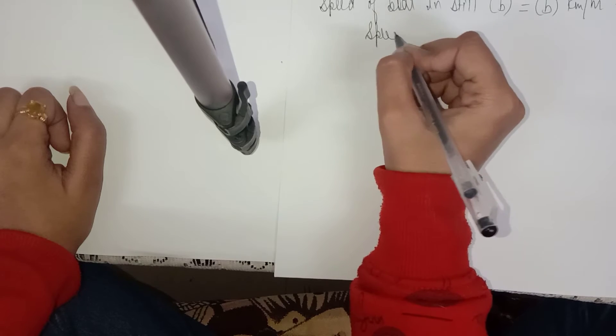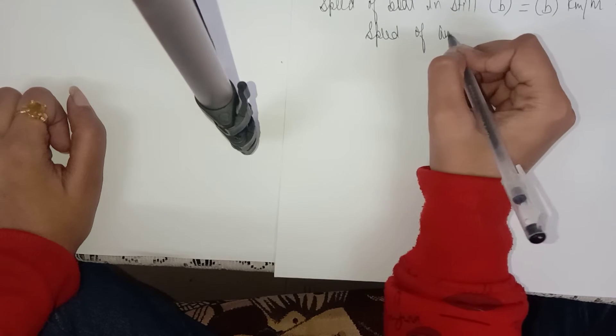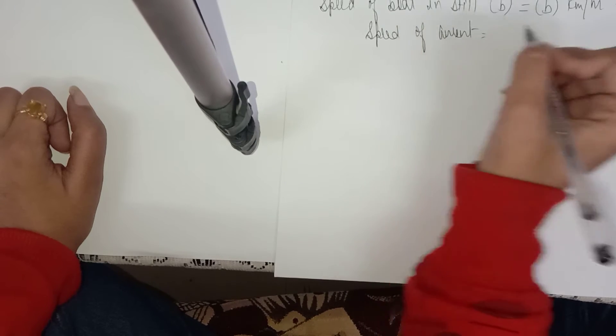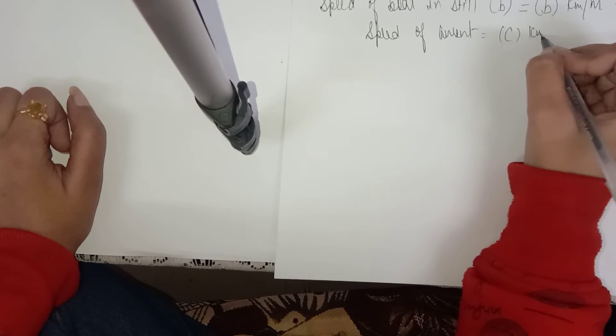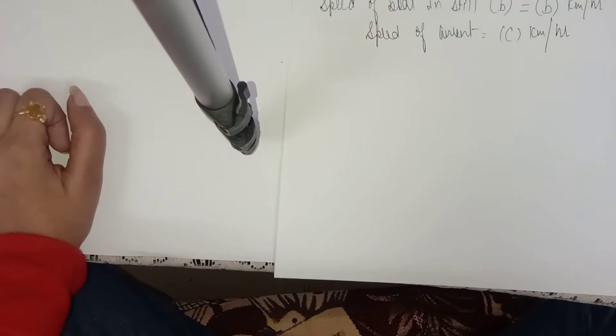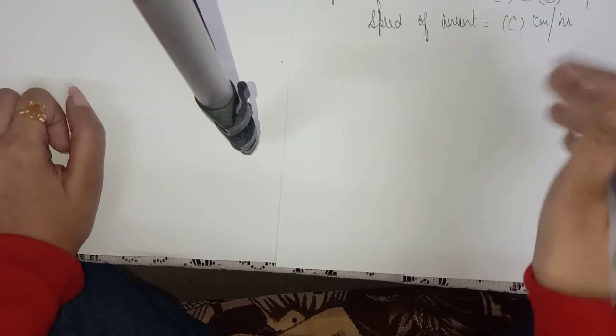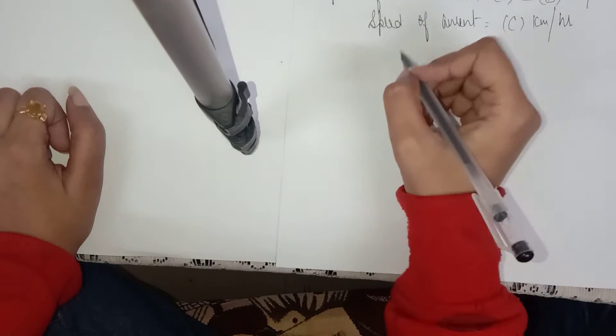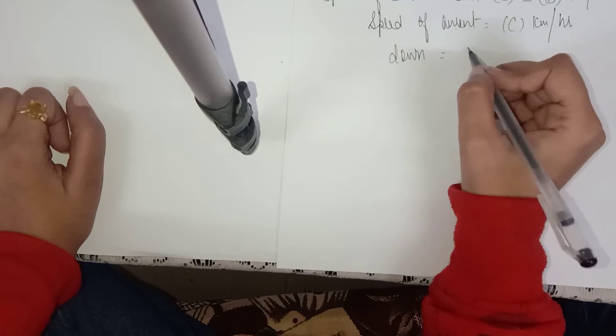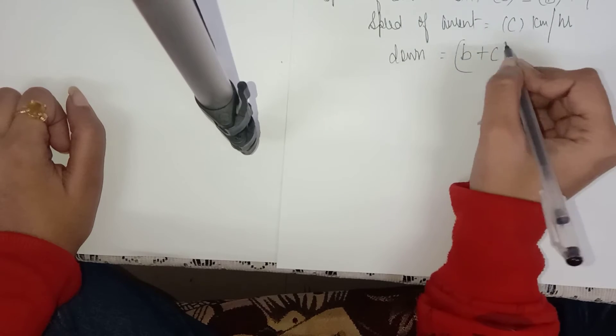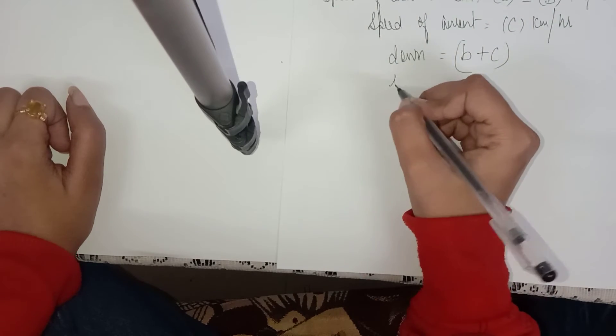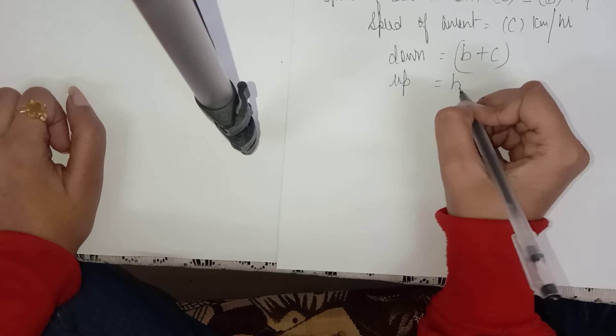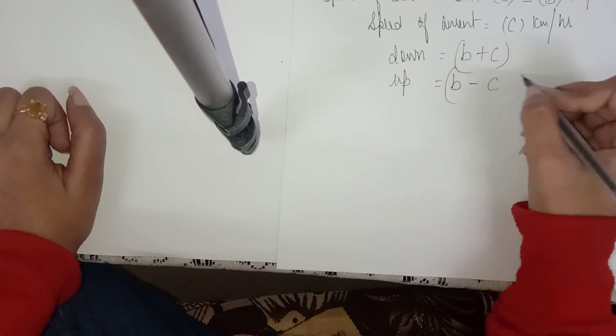And speed of current. It's easy to remember, that's why we use B and C. Now we calculate the downstream speed, that is B plus C. To calculate the upstream speed, B minus C is the upstream speed.